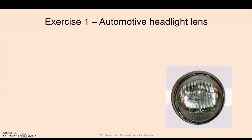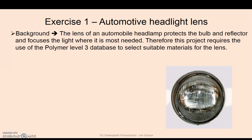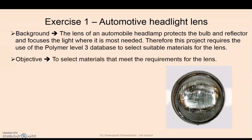So finally, we're going to look at the first exercise that we're going to do using the Level 3 Polymer CES EduPack database. So it's going to be looking at an automotive headlight lens. We're going to need to look at the background initially. So the lens of an automobile headlight protects the bulb and reflector and focuses the light where it's most needed. Therefore, this project requires the use of the Polymer Level 3 database to select a suitable material for the lens.